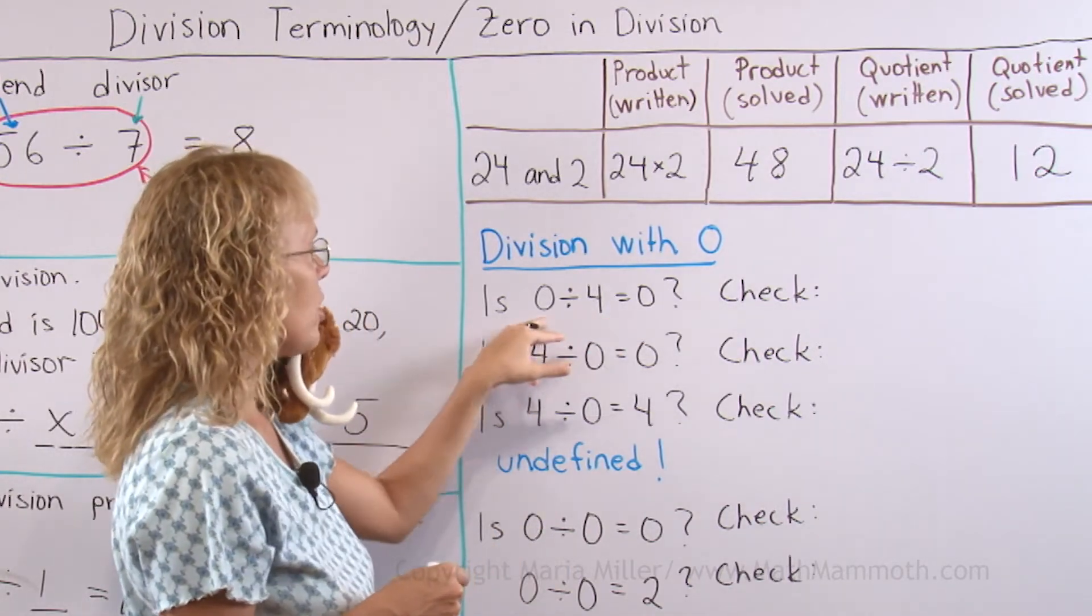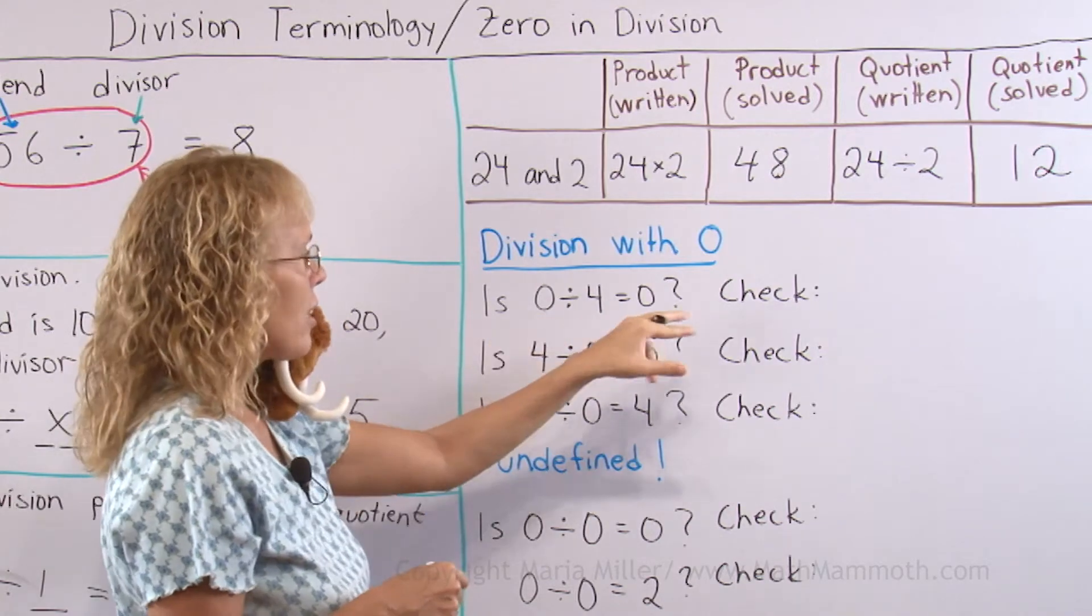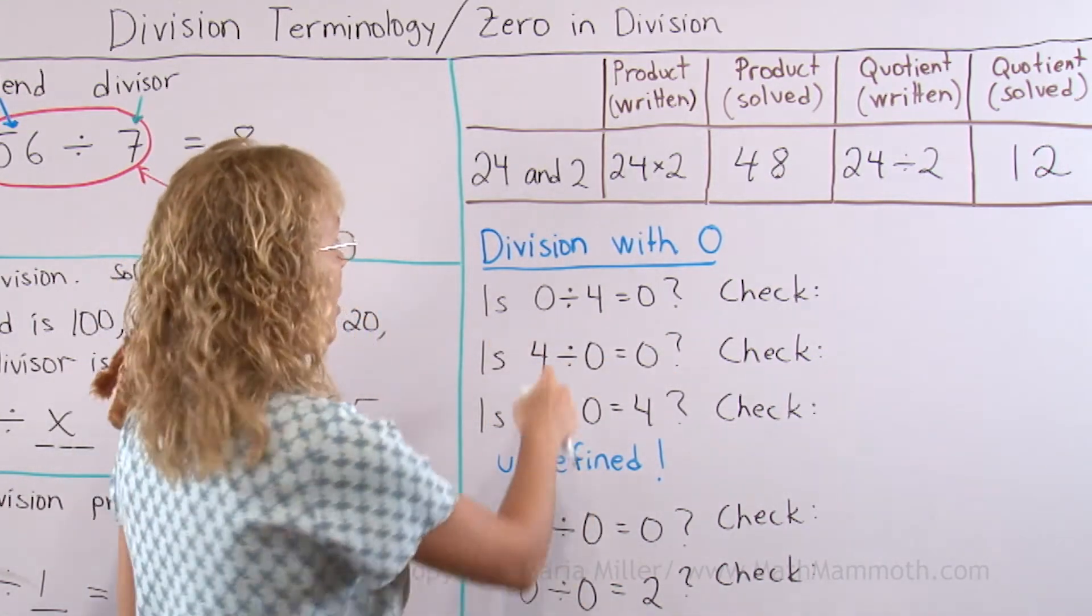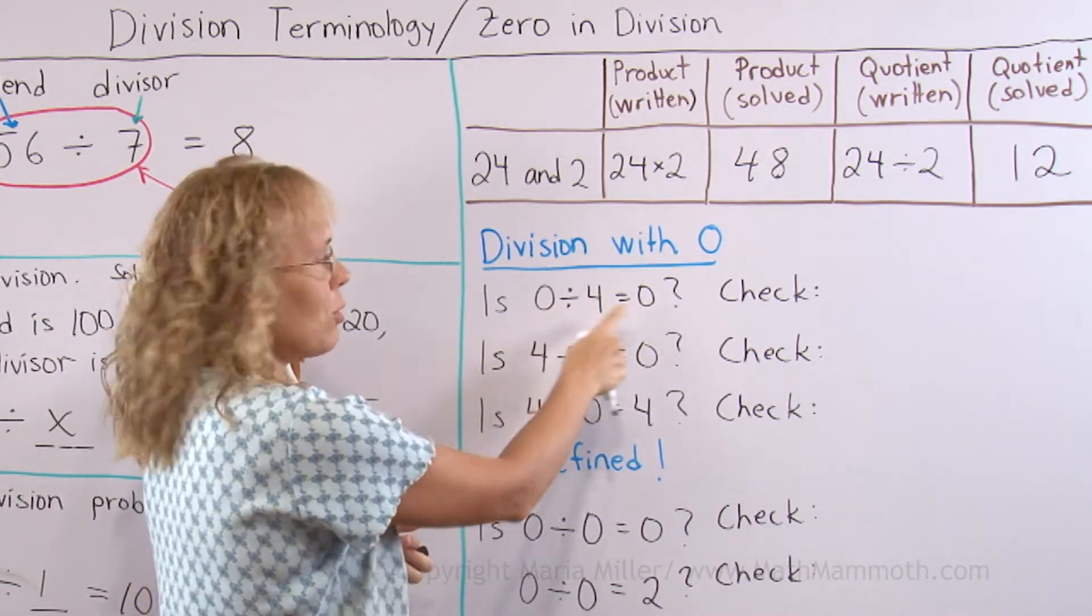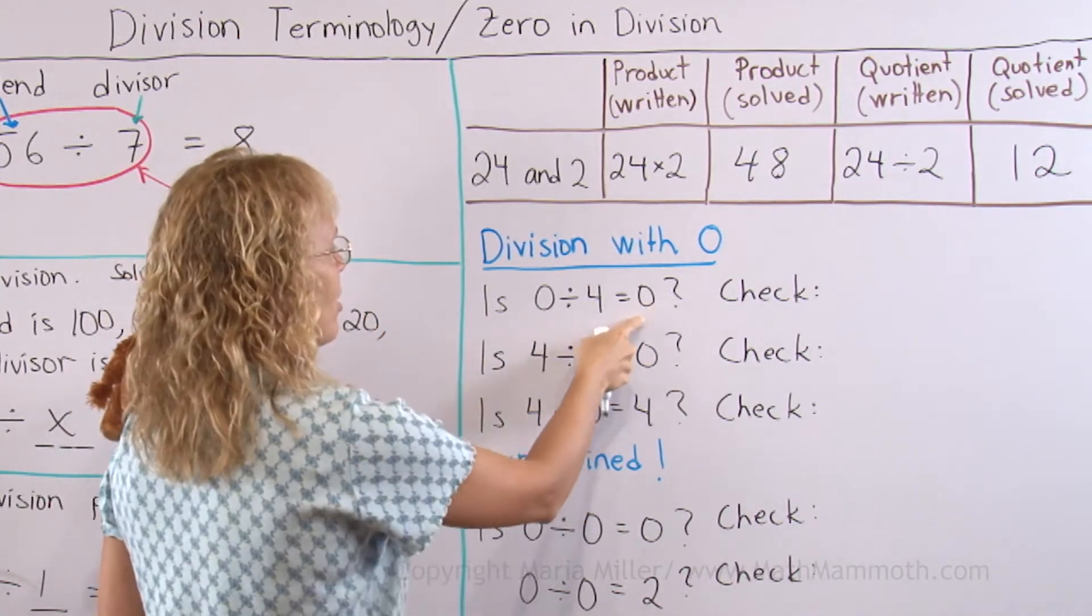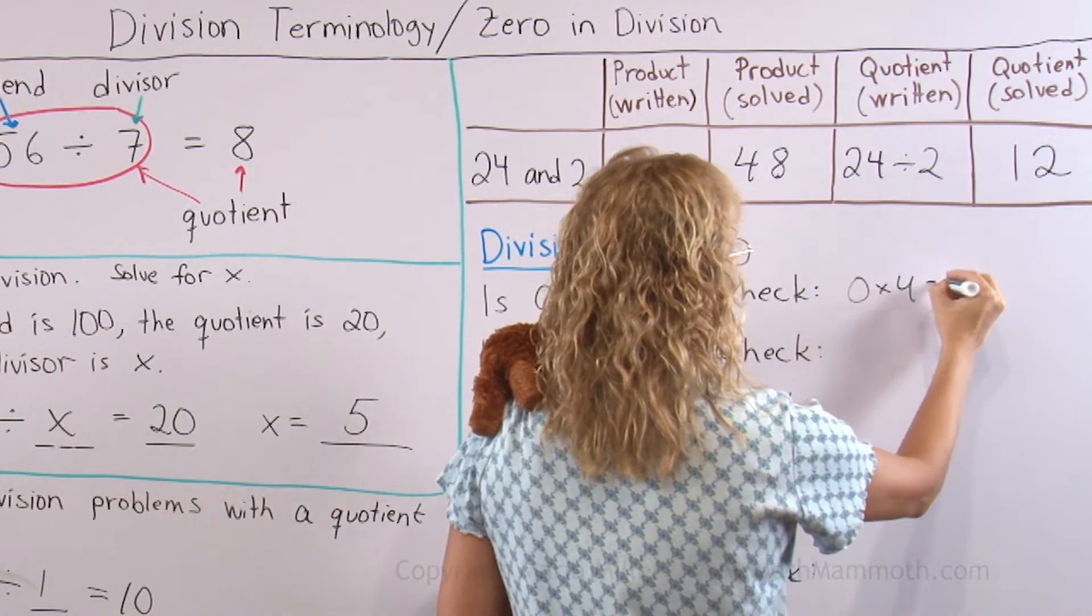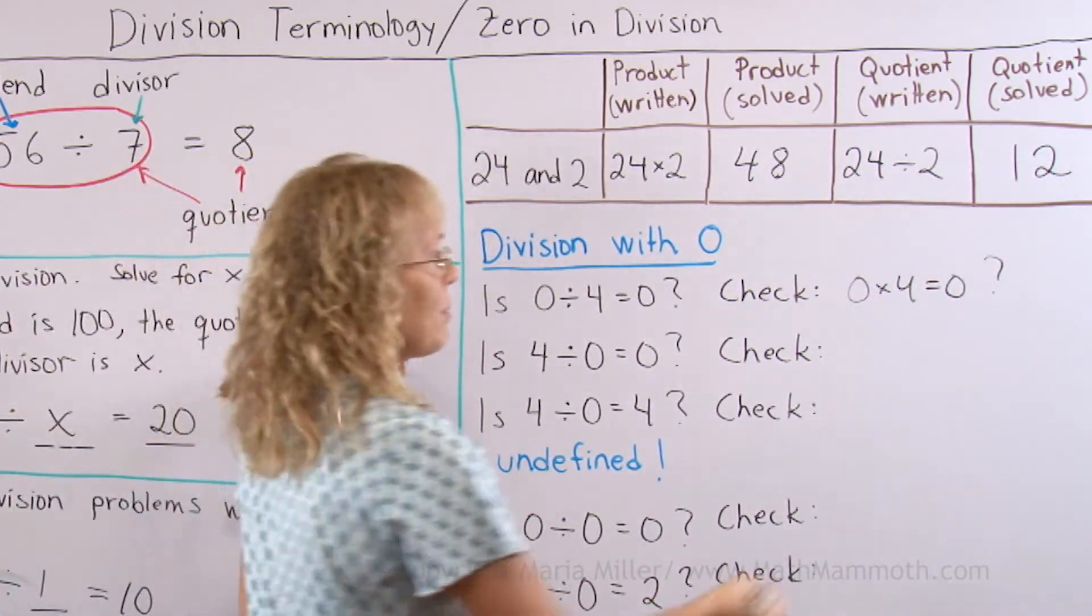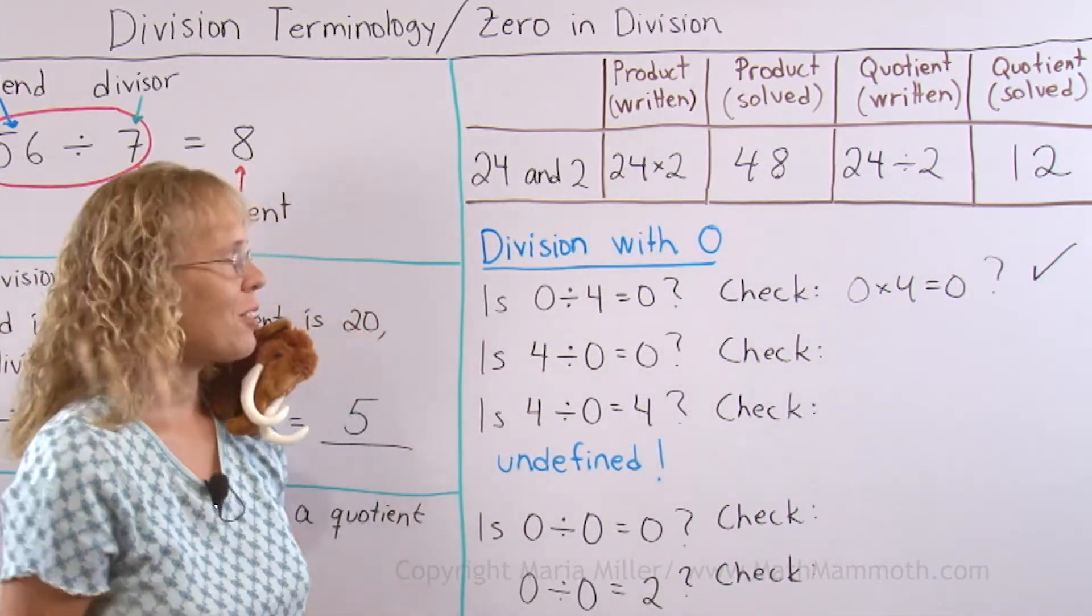Can we do this division? Can we do this one? The zeros, right? You can check each division by multiplication and check if it actually works. If this is true, then this times this has to equal this. You go backwards. I call it division backwards. It's multiplication. So check 0 times 4. Is that true? Yes, it is. So this works. 0 divided by 4 is indeed 0.